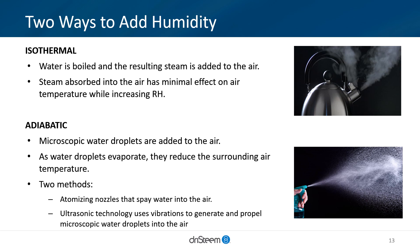The second way to humidify is adiabatic humidification, which adds microscopic water droplets into the air. As water droplets evaporate into the air, they reduce the surrounding air temperatures, providing free cooling while humidifying. Adiabatic humidification can be achieved with two different methods: atomizing nozzles that spray water directly into the air, or ultrasonic technology, which uses vibration to generate and propel microscopic water droplets into the air.